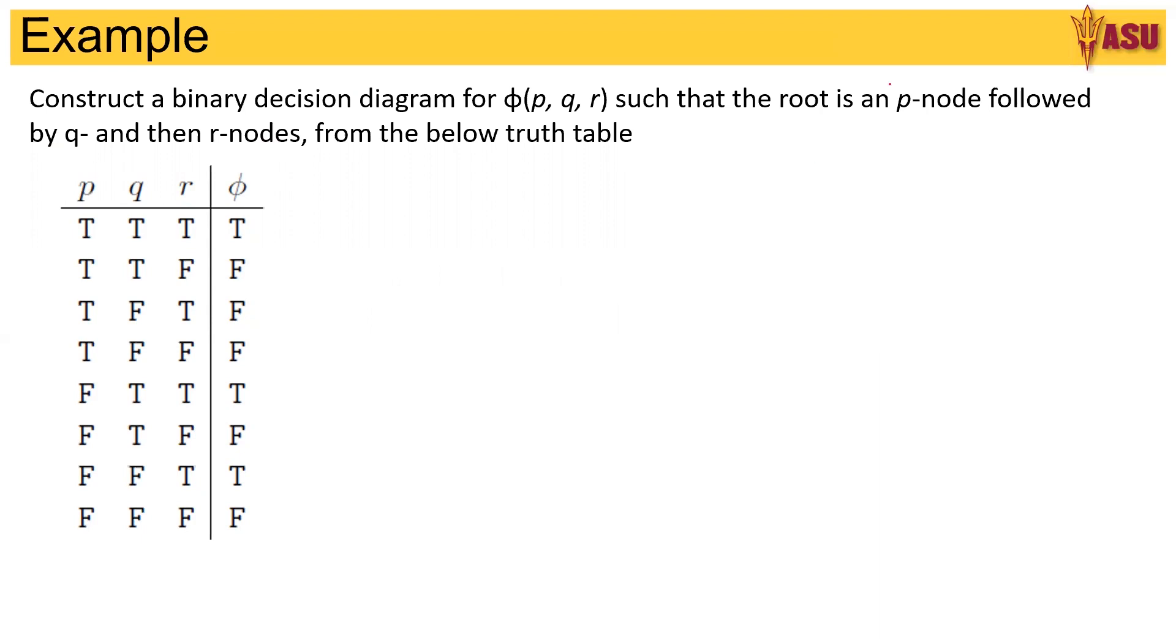So we first represent p because that is what is given to us, and then we look at from p, if I take a true, what happens? We go to a q. Do we also go to a q when we take false? So it goes to a q here on true and on false again we go to q here.